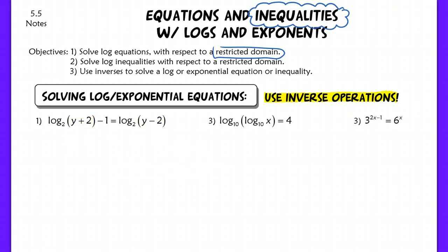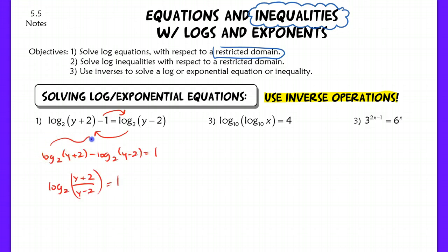Now when we approach problem number 1, we haven't seen anything quite like this yet where you have logs on both sides. What you want to do is collect your logs to one side and then isolate as best you can. You're going to use the properties of condensing like we did in section 5-4. So I would move this log to this side and the number over here, and after doing so, I can condense and rewrite the equation.